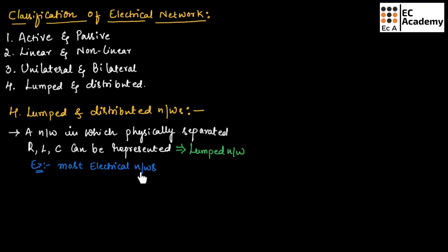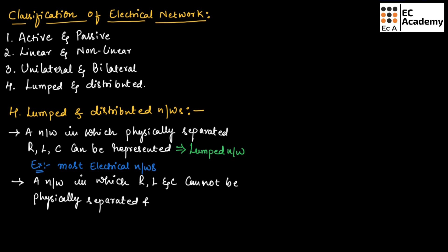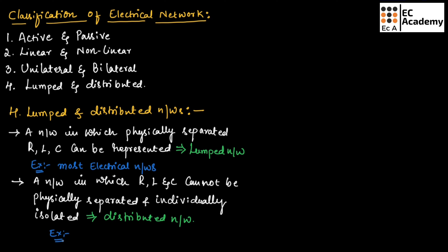A network in which R, L, and C cannot be physically separated and also cannot be individually isolated — such type of networks are known as distributed networks. An example of a distributed network is a transmission line.